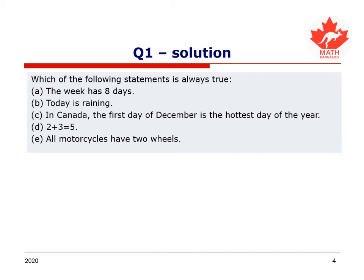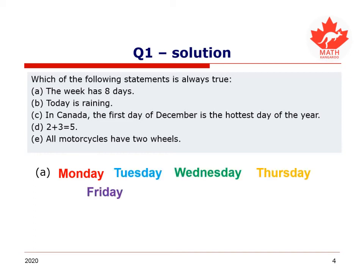Let's consider these statements one by one. The week has eight days — let's count them: Monday, Tuesday, Wednesday, Thursday, Friday, and my two personal favorites, Saturday and Sunday, the weekend days. How many is that? One, two, three, four, five, six, seven. Seven days, not eight. That means statement A is false — it is not always true.